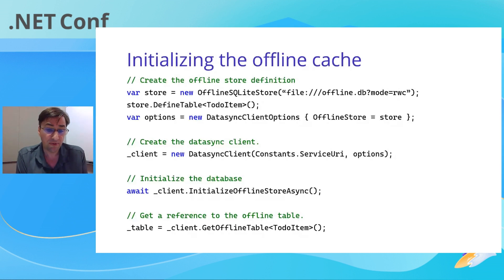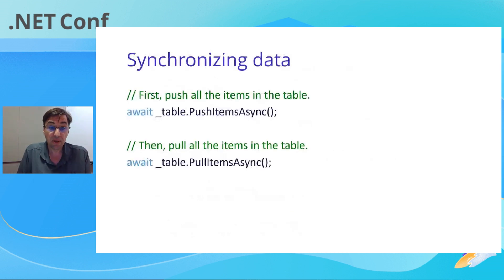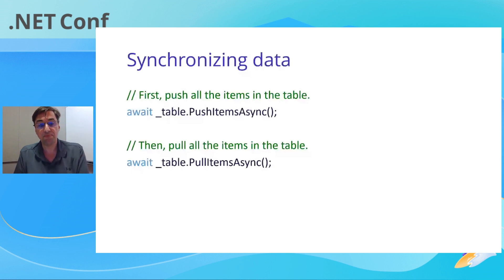Finally, you're going to get a reference to the offline table, which you can do as many times as you want — you can do it in single pages, it doesn't have to be a singleton. The client does have to be a singleton, but the table doesn't. Your next step is to synchronize the data from the cloud. There are two operations: one pushes items from the local offline cache to the remote server, and a second operation pulls items that have changed from the remote server down to your offline cache.